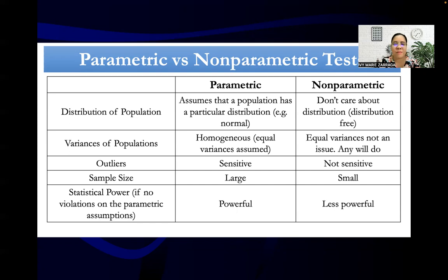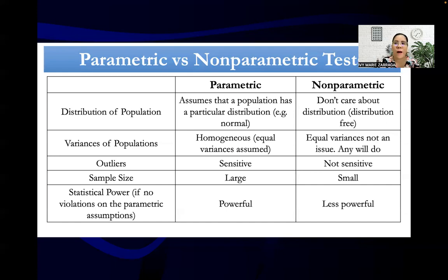Parametric is powerful while non-parametric is less powerful. Meaning, if you are a researcher using parametric tests, there is a high probability that you are going to reject the null hypothesis and accept the alternative hypothesis, stating that there is a significant relationship or significant difference among your variables.